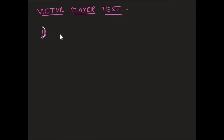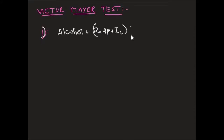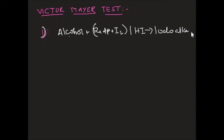In the Victor Meyer test, the first step is: alcohol will be treated with red phosphorus and iodine, or directly with hydrogen iodide. This gives an iodoalkane. So iodoalkane is the first step of the Victor Meyer test. In the second step, this iodoalkane will be treated with silver nitrite to obtain a nitroalkane.